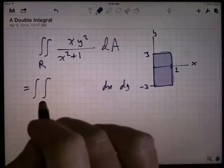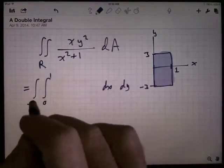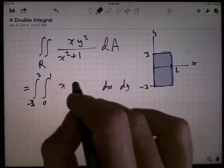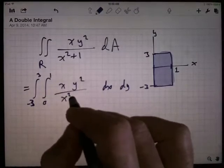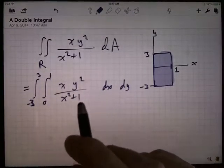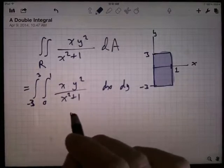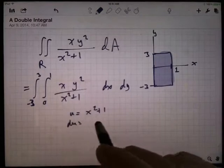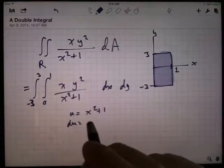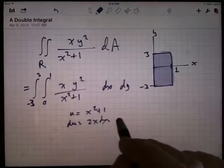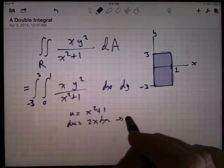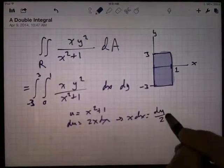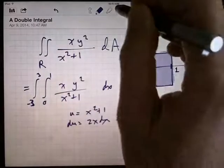So the X on the inside, the Xs are going from 0 to 1, and the Ys are going from minus 3 to 3. You've got to make sure you get those lined up right. So X Y squared over X squared plus 1. For the Xs, what I noticed is that I've got a nice U substitution here. Because if I let U equal X squared plus 1, that whole denominator, then DU is just 2X DX.